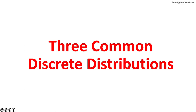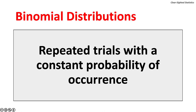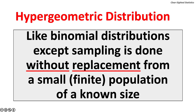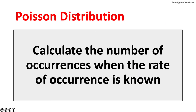The three common discrete distributions. Binomial probability distributions deal with repeated trials with a constant probability of occurrence. Hypergeometric probability distributions are like binomial, except sampling is done without replacement from a small or finite population of a known size. Poisson probability distributions calculate the number of occurrences when the rate of occurrence is known.